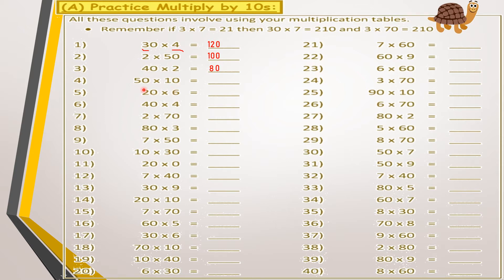For 50 multiplied by 10: I can say 5 multiplied by 10 equals 50 and drop down the zero to get 500. Or I can say 5 multiplied by 1 equals 5, then drop down the zero from 50 and the zero from 10, also giving 500 — same answer. For 20 multiplied by 6: multiply 2 by 6 equals 12, drop down the zero, answer is 120.